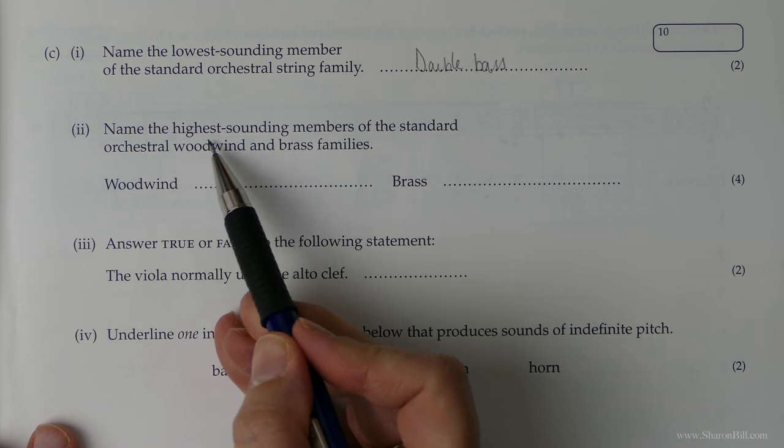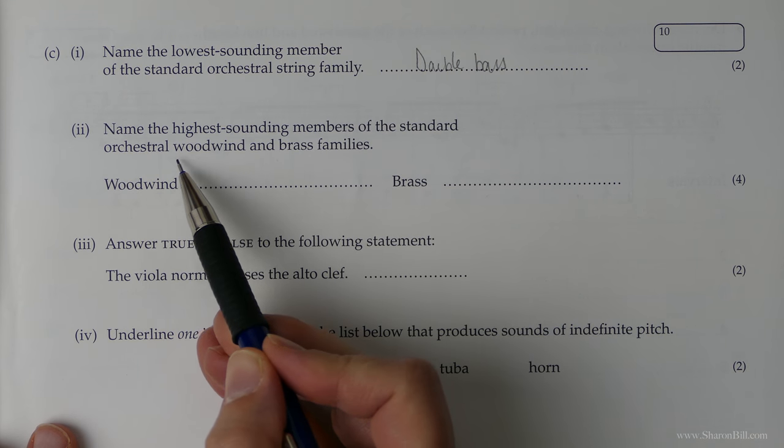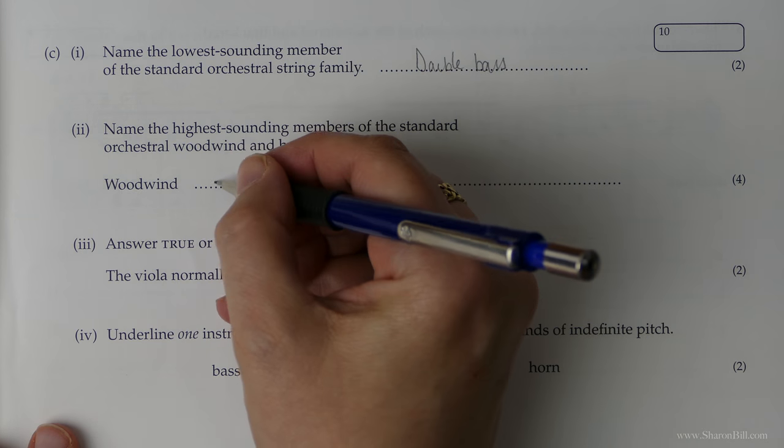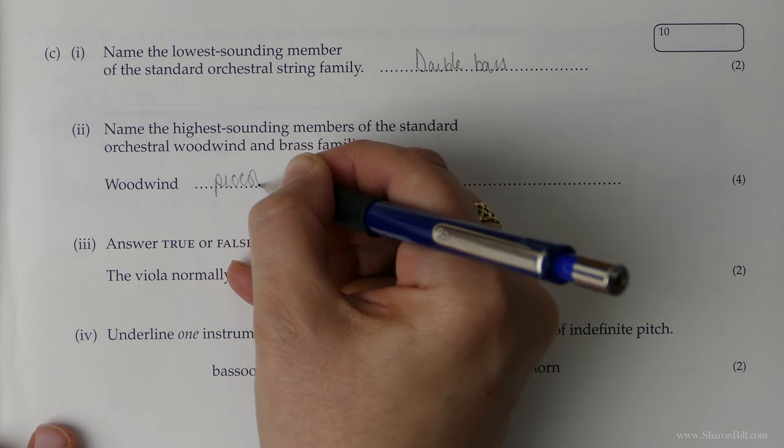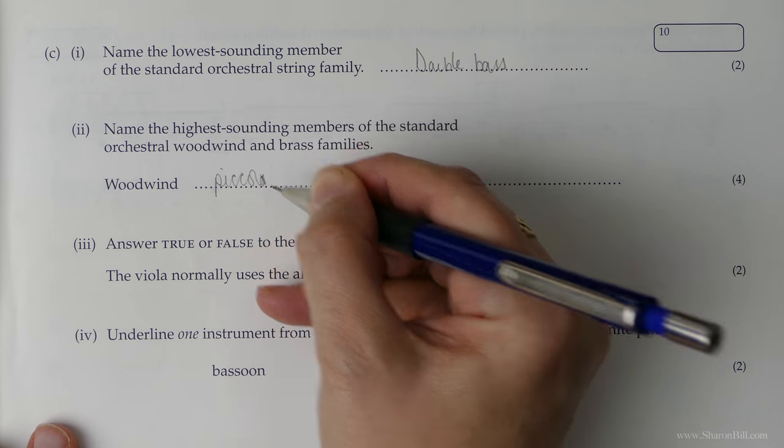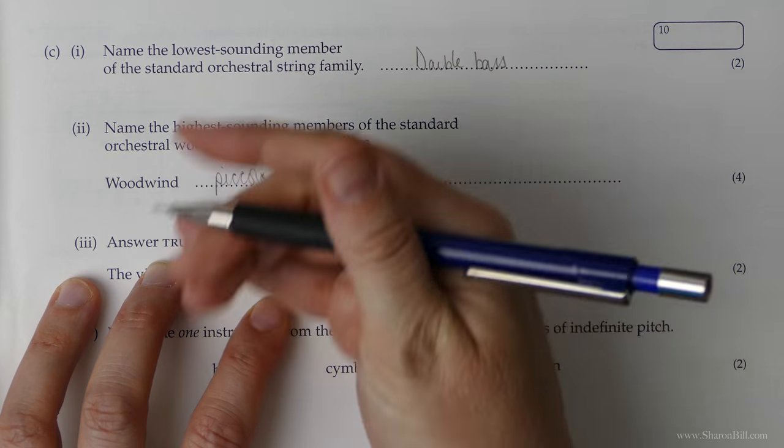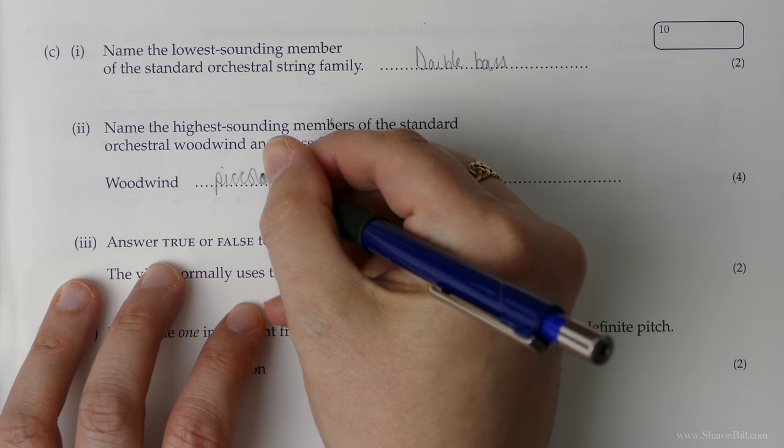The lowest of them all is the double bass. The highest sounding member of the standard orchestral woodwind or brass families is piccolo. You could perhaps also say flute, but piccolo is the absolute highest.